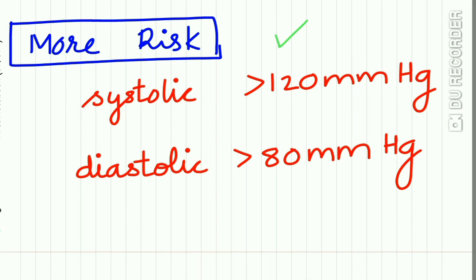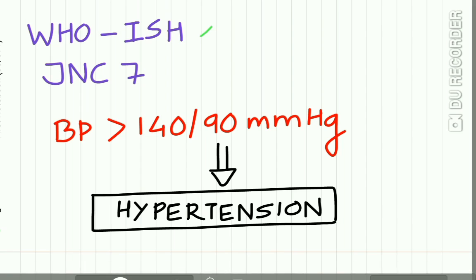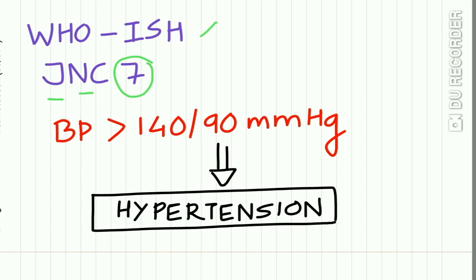A patient is at higher risk for cardiovascular diseases if their systolic BP is more than 120 mmHg and diastolic BP is more than 80 mmHg. According to WHO, the International Society of Hypertension, and the Seventh Report of the Joint National Commission, a patient is said to have hypertension if their BP is more than 140/90 mmHg.